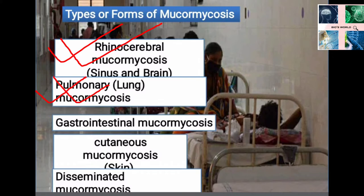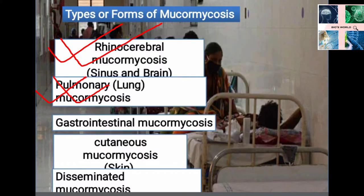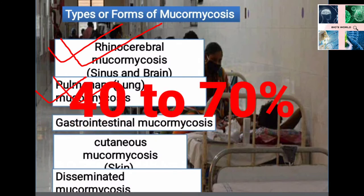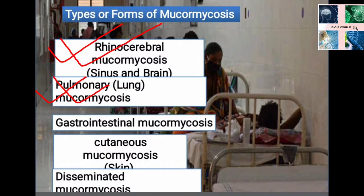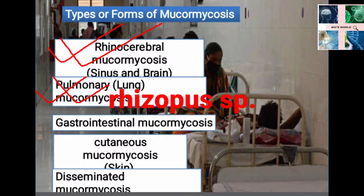The second type is pulmonary mucormycosis, which is a lung infection that can result in life-threatening opportunistic infection. It is the second most common infection, accounting for about 25% of total infections. It is seen mostly in immunocompromised patients and has a high mortality rate of 40–70%, especially in cases with rapid local progression and angio-invasion. The causative agent is mostly Rhizopus species, mainly mucor and rhizomucor species.